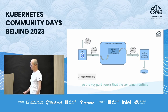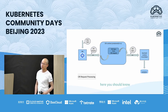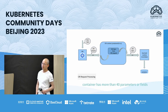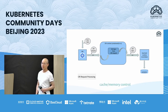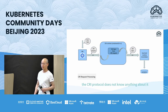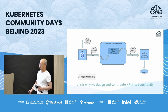The key part here is that the container runtime translates from the Kubernetes way to the details of the OCI runtime level. OCI containers have more than 40 parameters or fields, but the CRI protocol has only 15 to 20 fields. This means if you want to enable something like Intel RDT cache memory control — which is part of the OCI spec and can be configured at the OCI level — the CRI protocol does not know anything about it. This is why we designed and contributed NRI to the community.